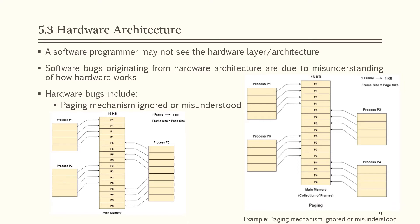Consider the example: main memory size is 16 KB and frame size is 1 KB, so memory is divided into 16 frames of 1 KB each. There are 4 processes — P1, P2, P3, and P4 — of 4 KB each. Each process is divided into pages of 1 KB so one page fits in one frame. Initially all frames are empty, so pages are stored contiguously.